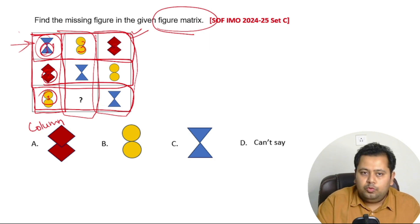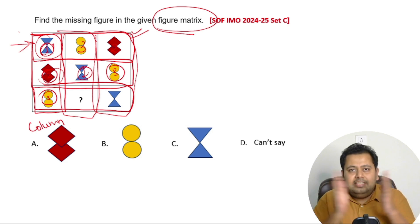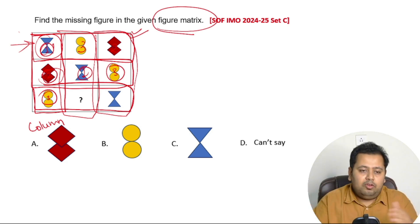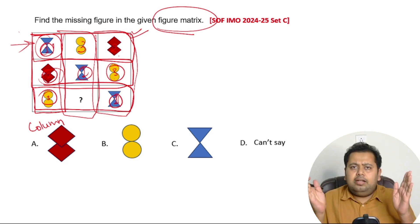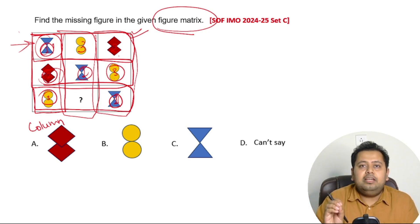If I just see over here, this is figure number two, this is figure number one, and this is figure number three. So in each row and in each column, you will always find all the three figures in that single row or in that single column.